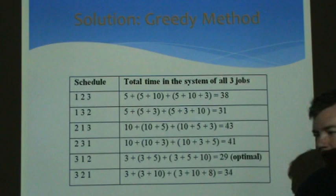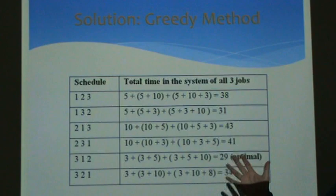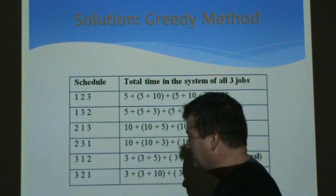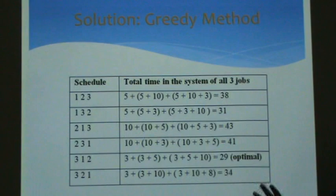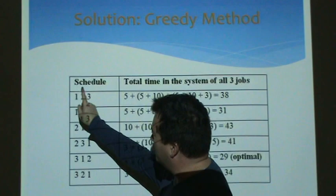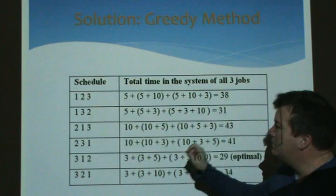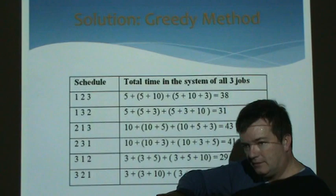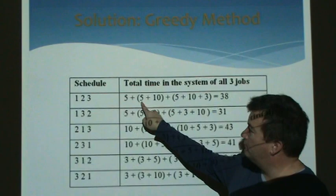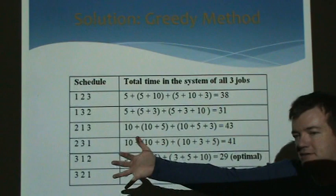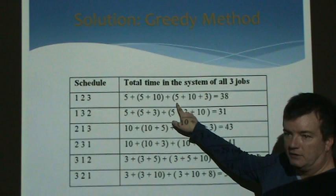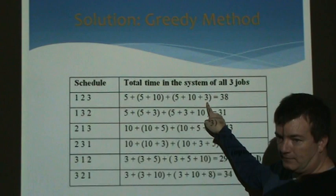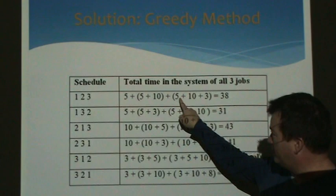But suppose we didn't know that. One way to solve any problem is to take every possible combination, evaluate it, and take the best answer. Suppose we use the batting order job one first, job two second, job three third. Job one finishes at five seconds. Job two waits behind job one, so it finishes at five plus ten, which is fifteen. The third job waits for both to finish, so it finishes at five plus ten plus three, which is eighteen seconds.